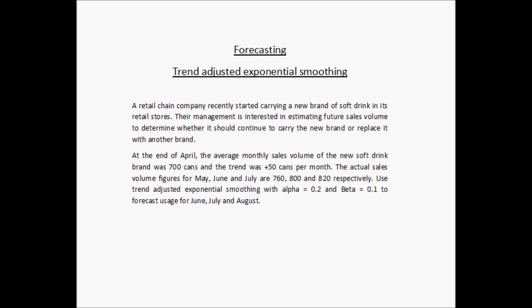Use trend adjusted exponential smoothing with alpha equals 0.2 and beta equals 0.1 to forecast the usage for June, July, and August. At the end of April, the average monthly sales volume was 700 cans and the trend was 50 cans per month. We have the actual sales volume for May, June, and July, and we need to find the forecast for June, July, and August. We are mainly trying to find out the forecasted sales volume for August.